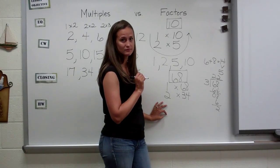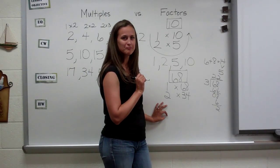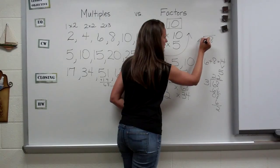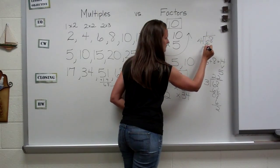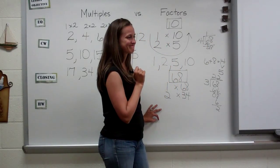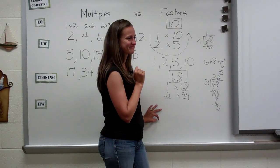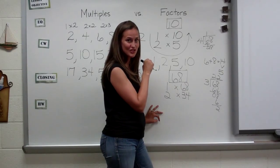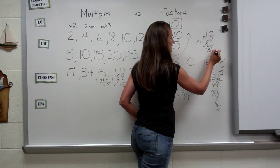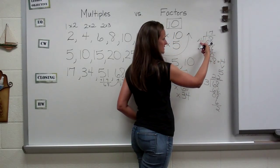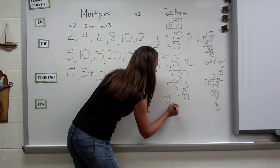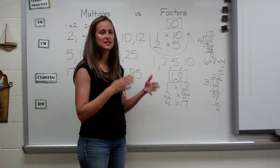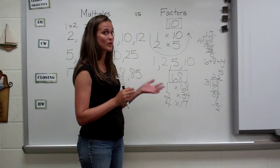What about four? Can I divide sixty-eight by four? I can. Sixty-eight divided by four: four goes into six one time, and twenty-eight divided by four is seven. So four times seventeen gives you sixty-eight. What about five? Does sixty-eight end in zero or five? No, so we're going to skip five.